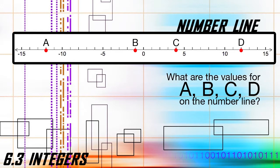What are the values for A, B, C, and D on the number line? Since you already have the points on the number line, use these steps. Step one, start at zero. Step two, count the units until you reach the point. Step three, if you went to the left of zero, the integer is negative. Step four, if you went to the right of zero, the integer is positive. Step five, write the integer that corresponds to the letter. Pause the video to find the values, then hit play to check your answers.